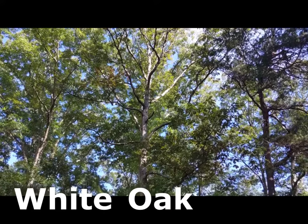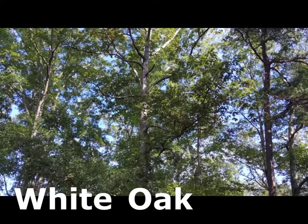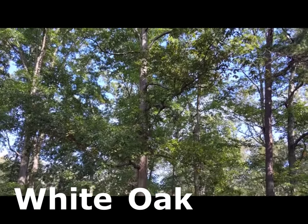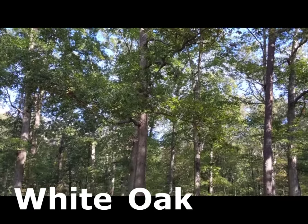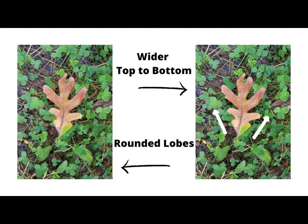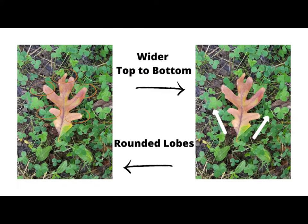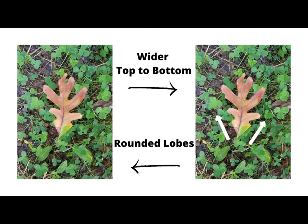White oaks, particularly common in the Berea College Forest, have leaves with rounded lobes and have a distinct shape which helps with identifying them. White oak leaves, along with many other oak species, start with a smaller width at the base of the leaf and get wider as it goes to the top of the leaf.